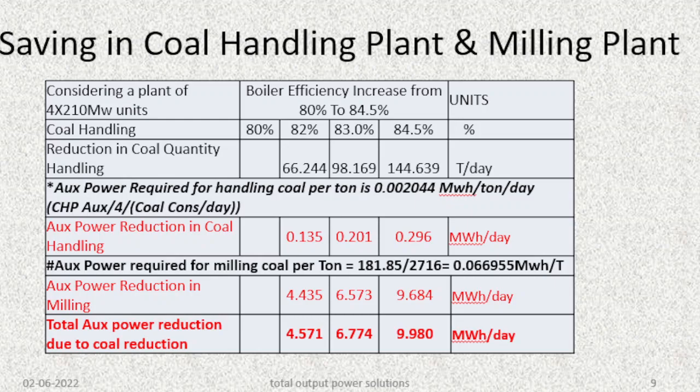Similarly, the auxiliary power required for milling: after the coal handling plant, the coal enters the milling section. Because the fuel quantity has decreased, there will be a reduction in auxiliary power in milling, accounting for around 9.684 MW per day. The total auxiliary power reduction due to coal reduction would be around 9.980 MW per day.